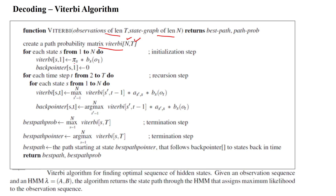The probability matrix has N as the length of the graph and T as the number of observations. In the initialization step, we use the initialization probability values and after reaching a particular state we get some observations — calculated by multiplication. The back pointer for state 1 is 0. We will observe the pattern 3, 1, 3.